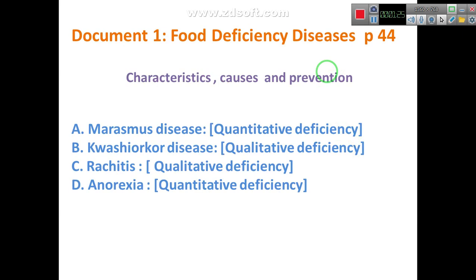Document 1: Food Deficiency Diseases, page 44 — Characteristics, Causes and Prevention. For these Food Deficiency Diseases, we will study three things: Characteristics or Symptoms, which are the signs of the disease; the Causes, which explain what caused the disease; and Prevention — how we can prevent or treat the disease.